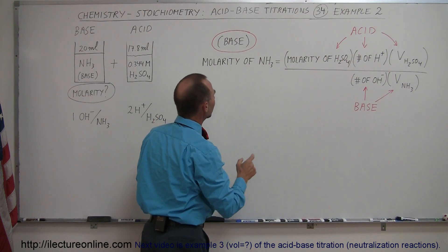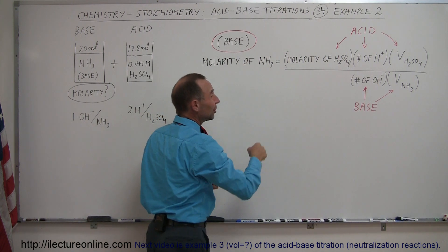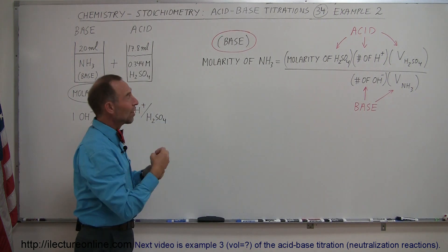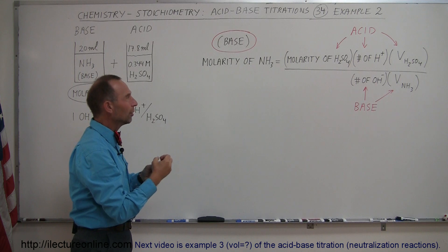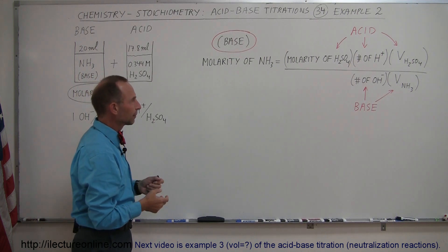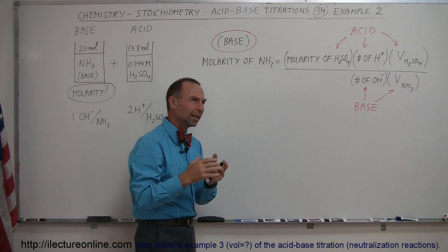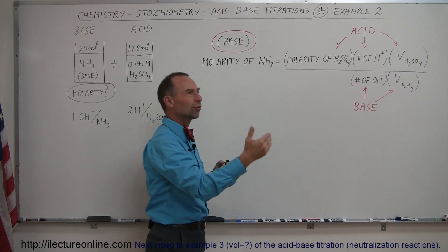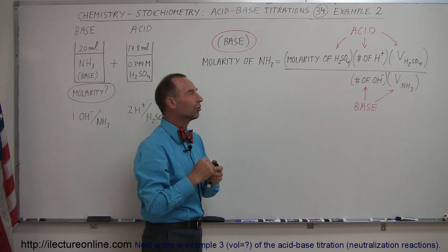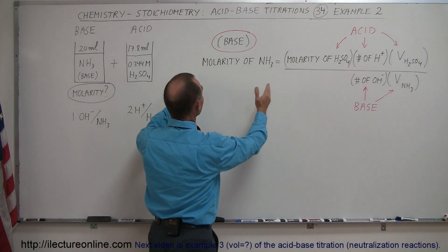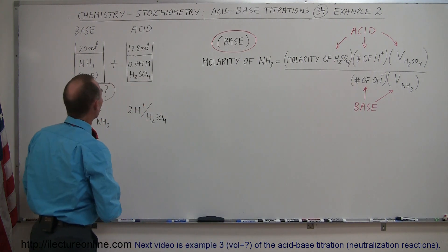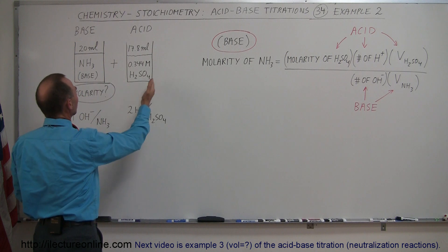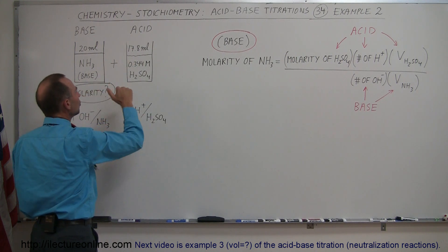Ammonia is a base because when you put ammonia in water, it will extract a hydrogen ion out of the water, making the water more basic. So that would then increase the ratio of the hydroxide ions to the hydrogen ions. So how do you find the molarity of the base, the unknown base, when you went through a titration like this? So you added enough acid to the base to neutralize it.